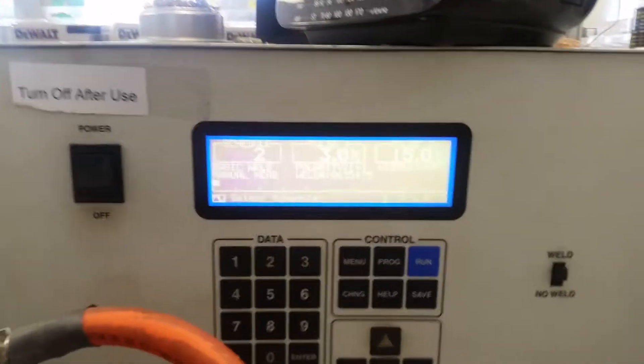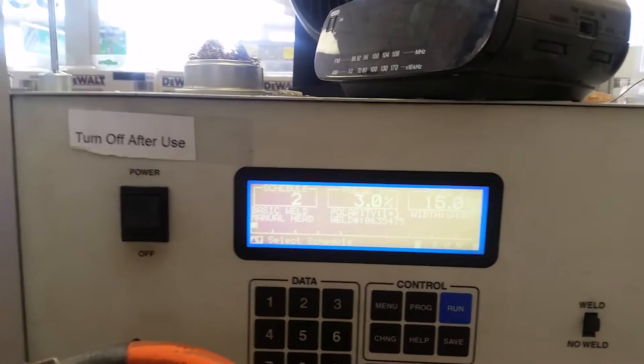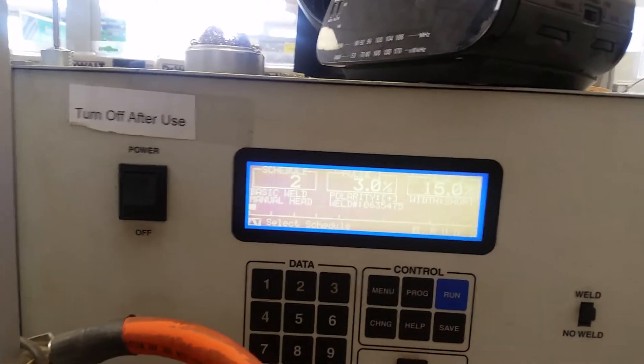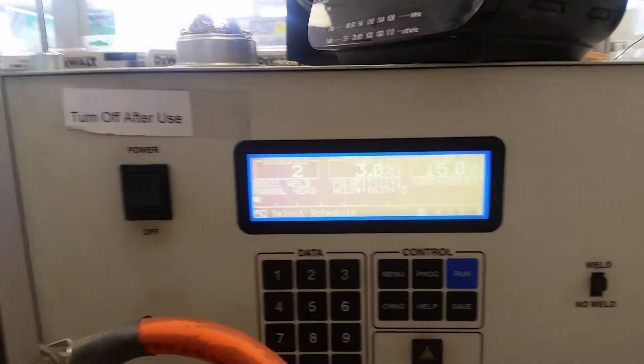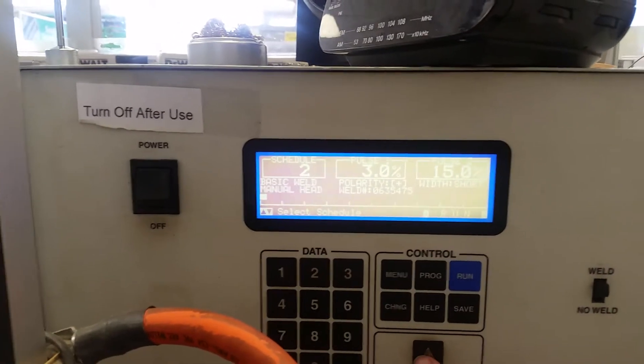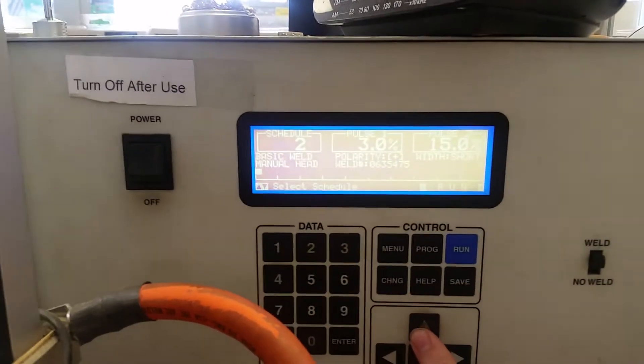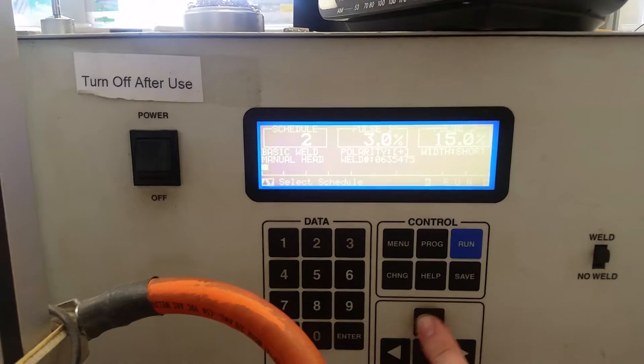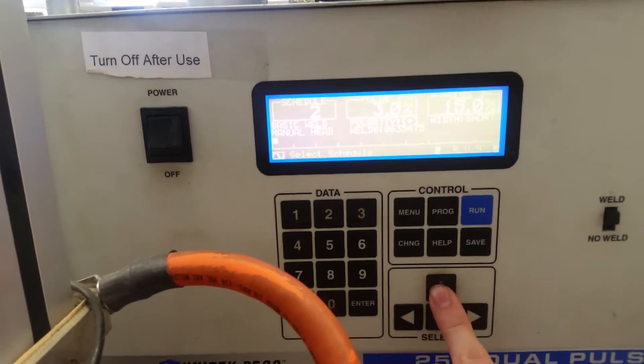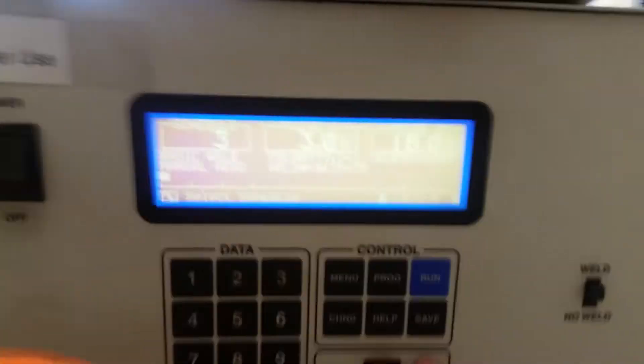And then once it's booted up here, you've got different schedules which would be the pulse length. I guess it doesn't tell me how many watts or volts or anything like that it's putting out. I'm sure there's a way to get in there, but I am not trying to do that. I do not want to mess this up. But basically the way this one's set up, the higher up you go the longer the pulses are.